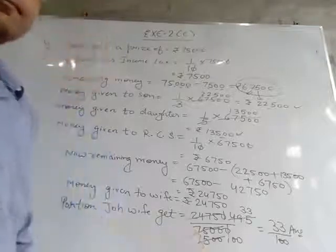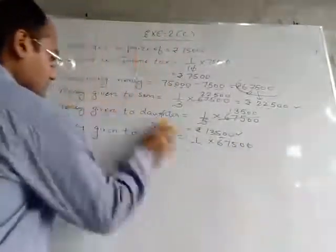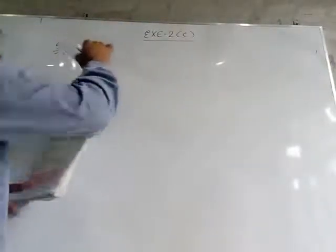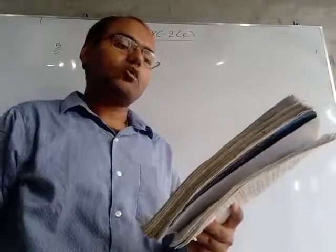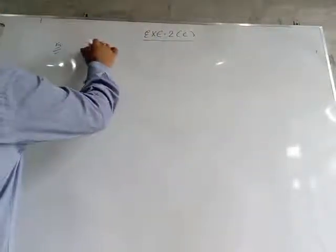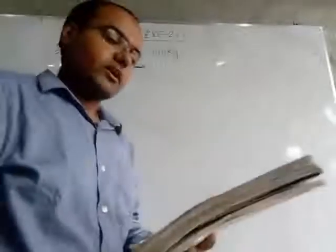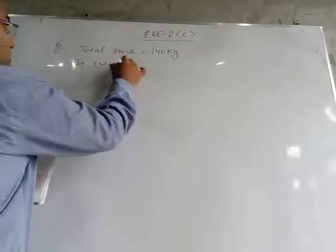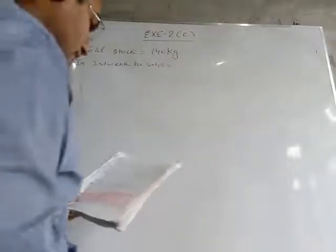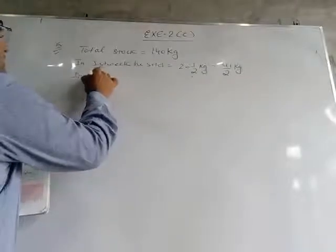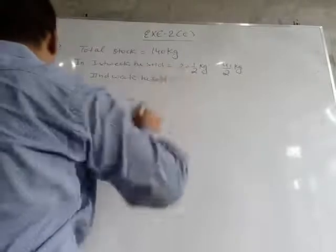Now see question number 5. A shopkeeper has a stock of 140 kg of wheat. First we write: total stock = 140 kg. In the first 4 weeks he sold different amounts. In the 1st week he sold 24½ kg, which is 41/2 kg as an improper fraction. In the 2nd week he sold 25¾ kg.